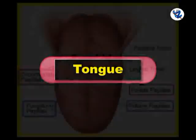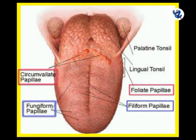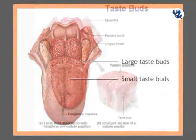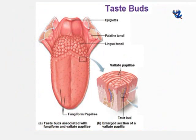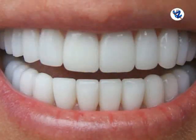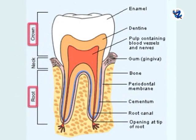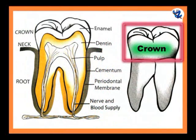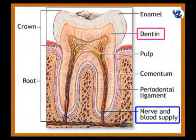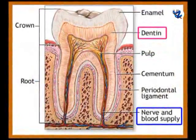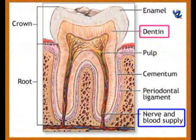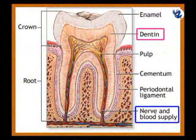Then tongue — it is a muscular fleshy organ which possesses papillae that have the taste buds. The tongue helps in rolling the food and mixing it with saliva. Then teeth — 32 teeth are present in an adult human being. Each tooth has a crown and a root. The crown is covered by enamel, the hardest substance in the body. The body of the tooth is made of bone-like dentine, beneath which is a central cavity having blood vessels, nerves and pulp.